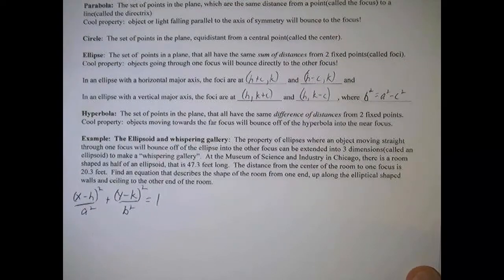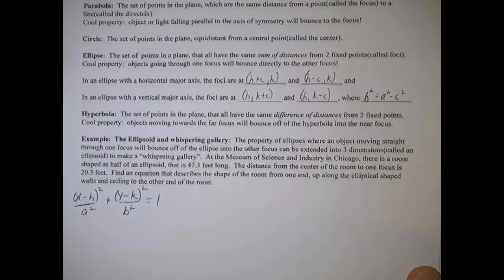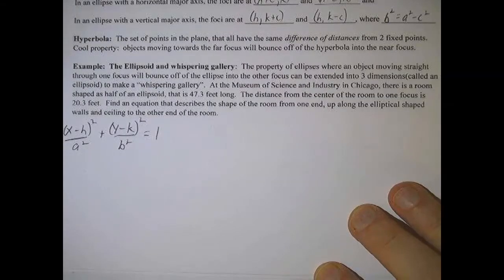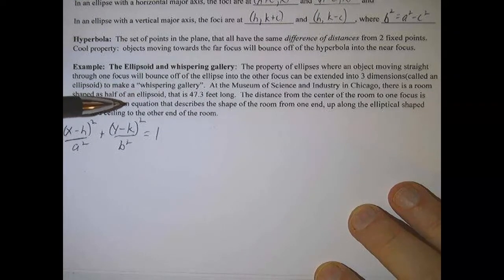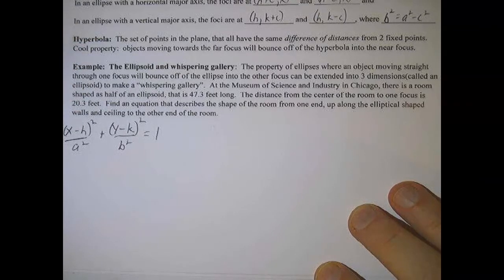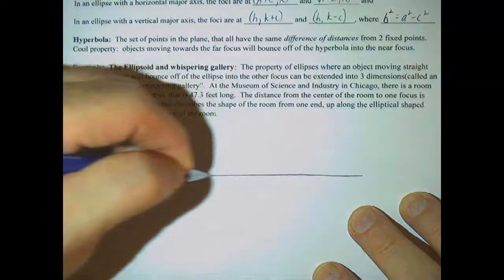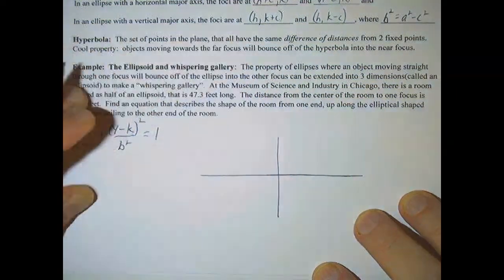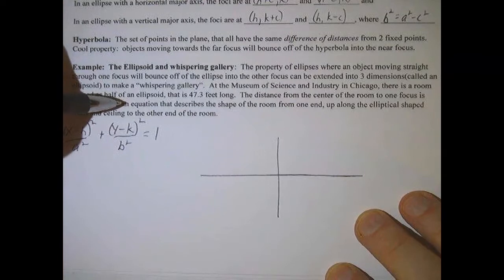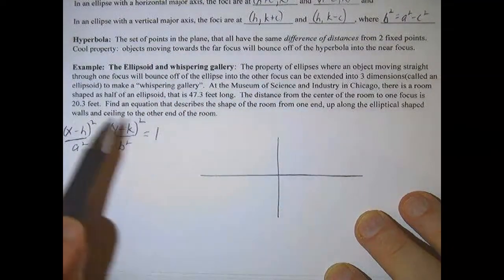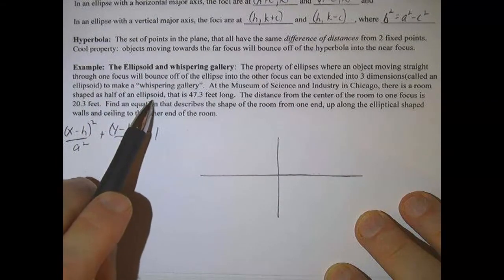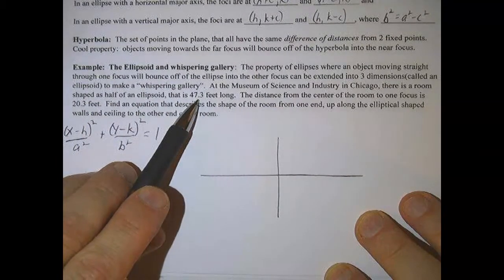So let's look at this problem. Take a minute and read it. So this problem is about a whispering gallery like we were talking about, and it's ellipsoid, which is a three-dimensional ellipse, and we're going to draw a two-dimensional slice of this room. So what we're going to do is we're going to take an xy-plane, and we're going to pretty much try to draw this onto the xy-plane.